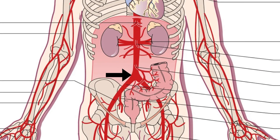The abdominal aorta continues the journey on the vertebral column, slightly to the left, giving some pairs of small posterior lumbar arteries. It then bifurcates into the right and left common iliac arteries and a small median sacral artery at L4, approximately the level of the umbilicus.